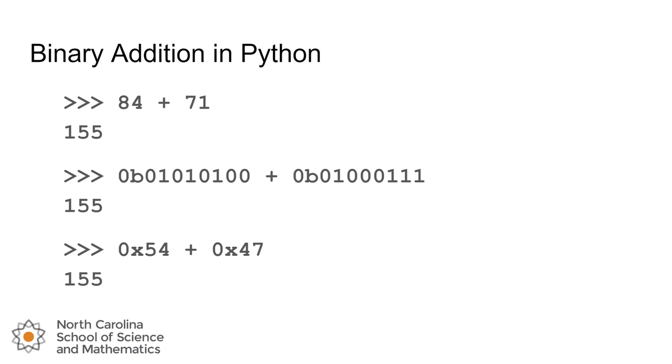But here's how you can add those same two numbers with their different representations. We've seen in an earlier lesson that we can prefix a binary number with 0b to indicate this is a binary number. So there's the exact same two binary numbers we just added by hand that are being calculated using Python. And that's not unique to binary. We can do the same thing with hex. So 84 is the hexadecimal number 54, the 71 is hexadecimal number 47. And using the 0x prefix on each of those numbers, we can add them together at the command line as well.